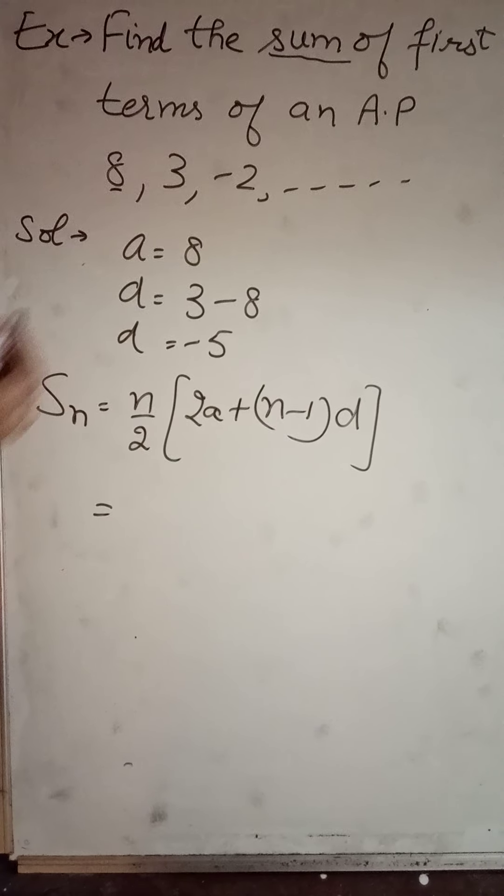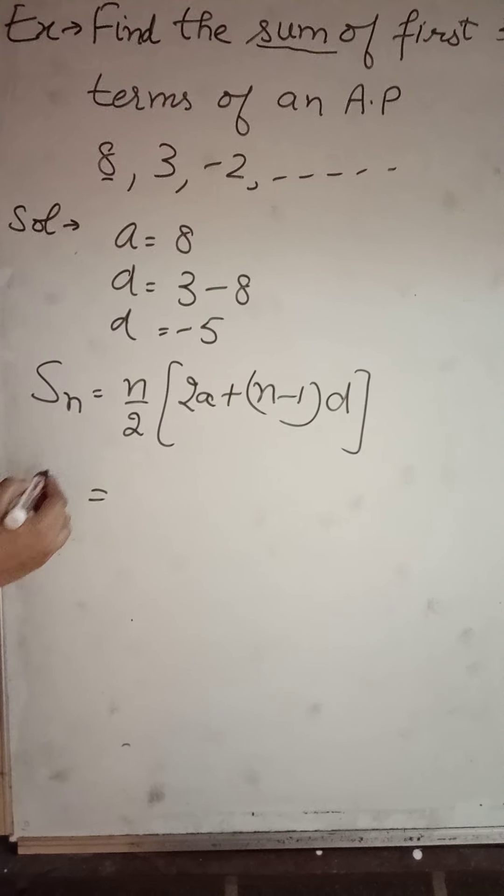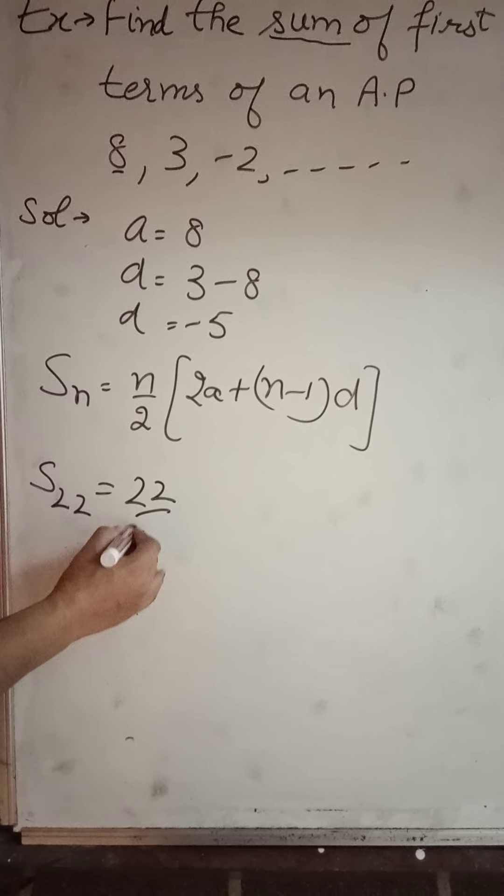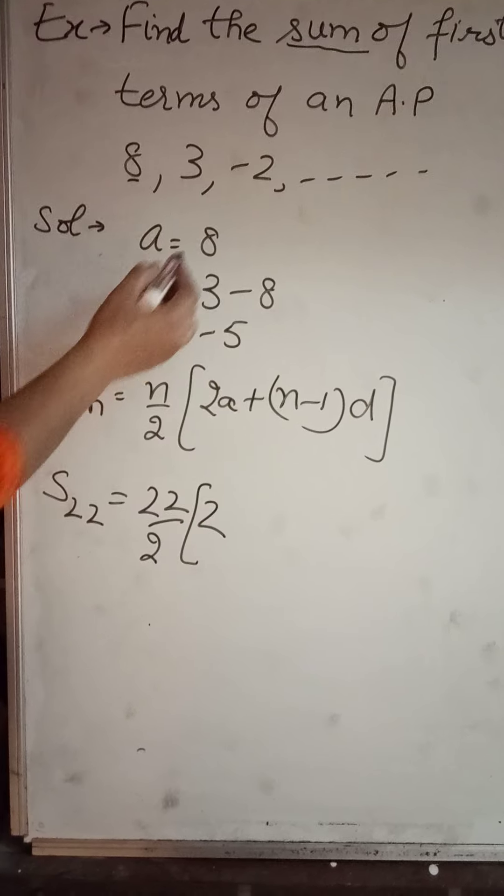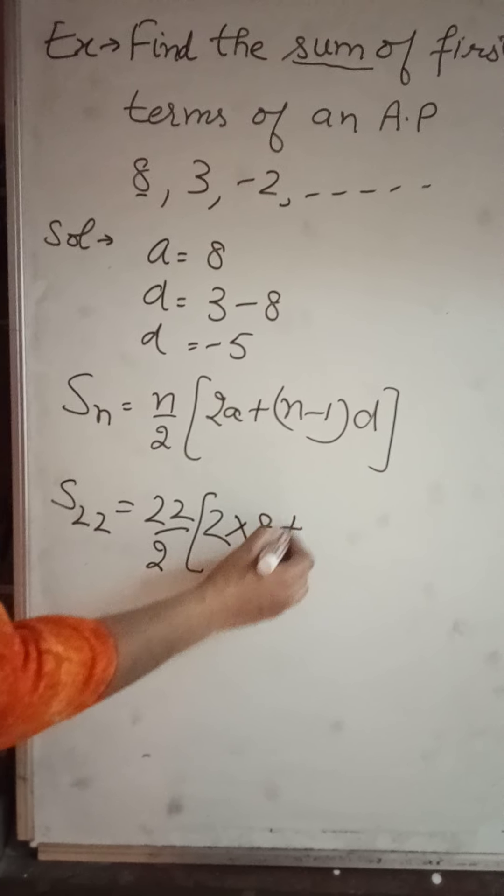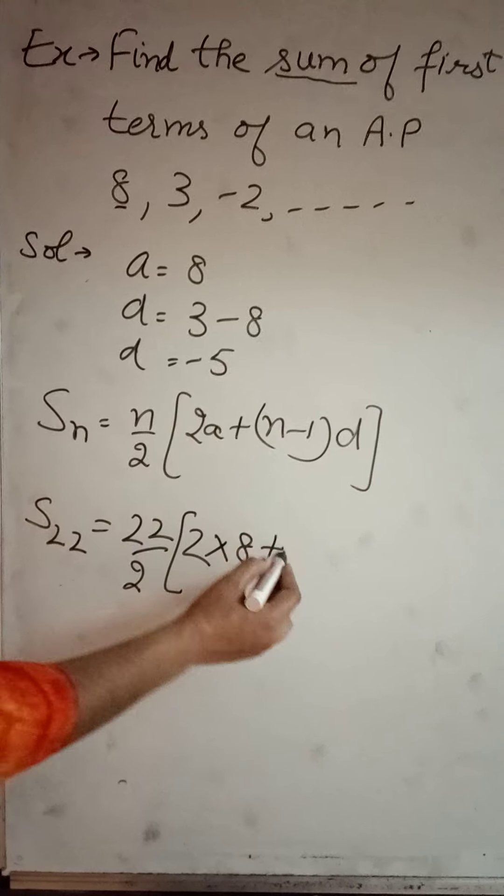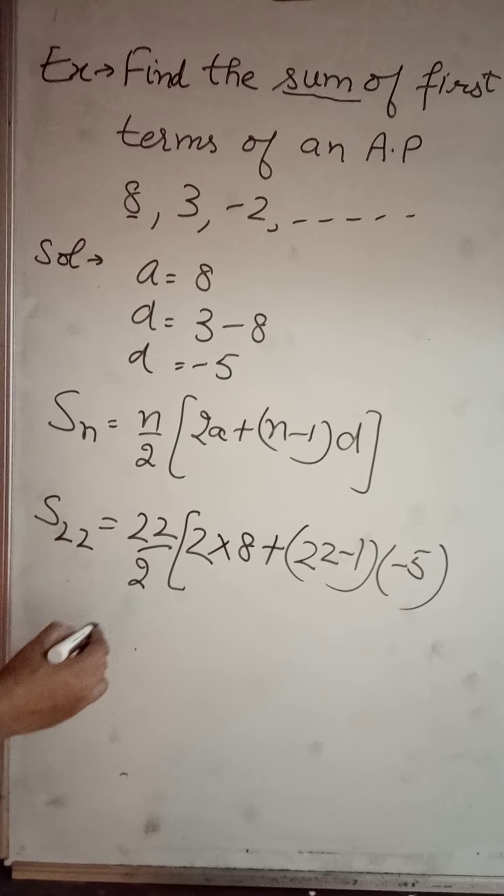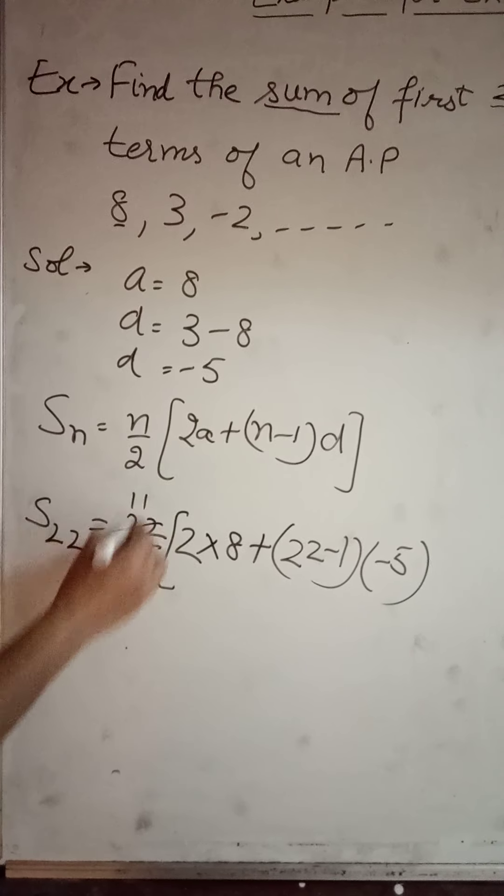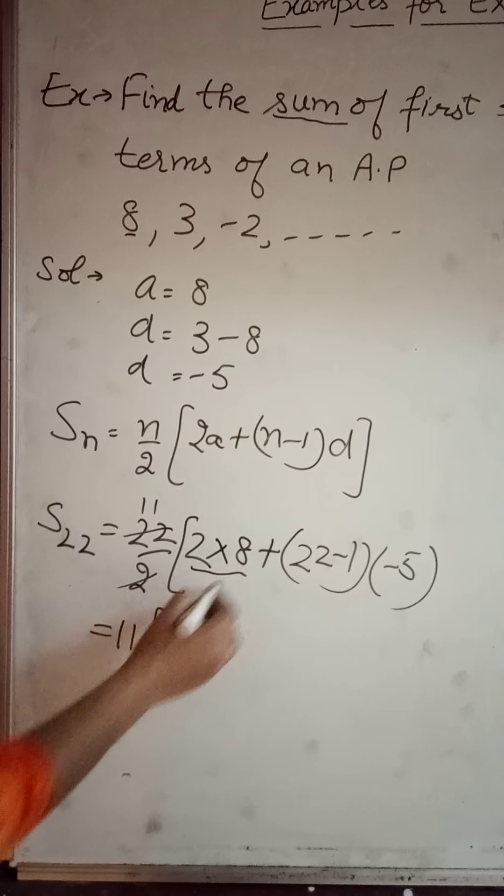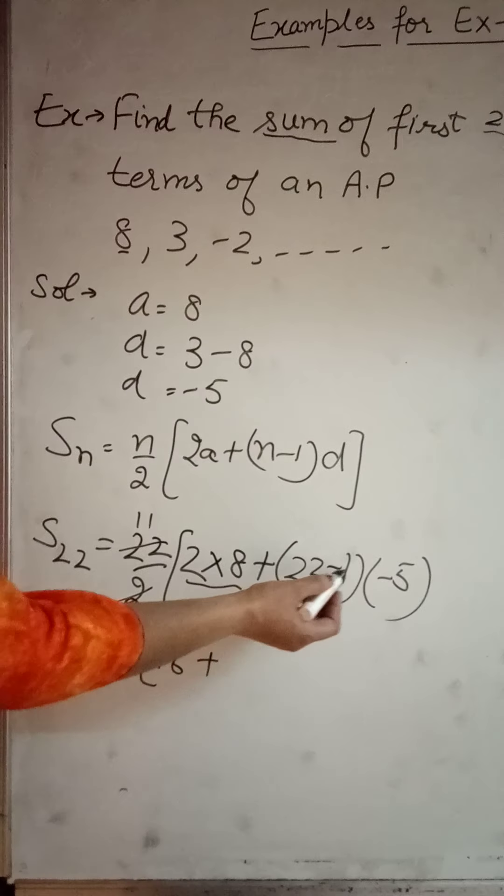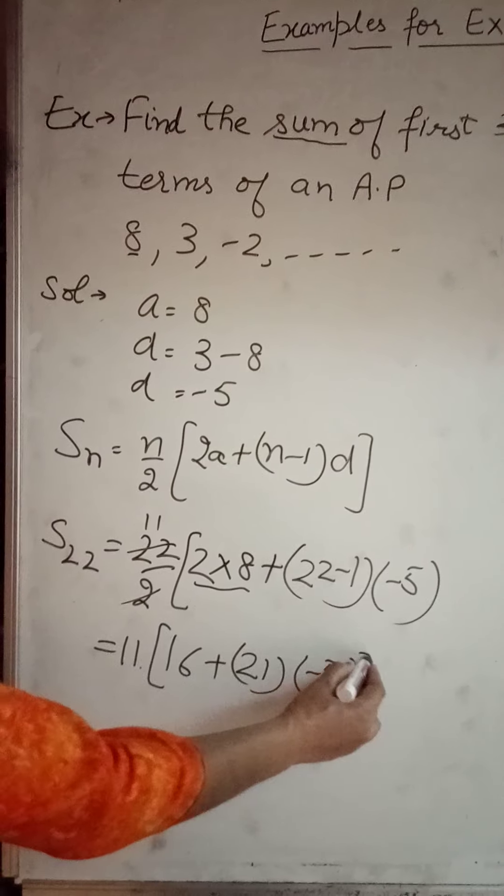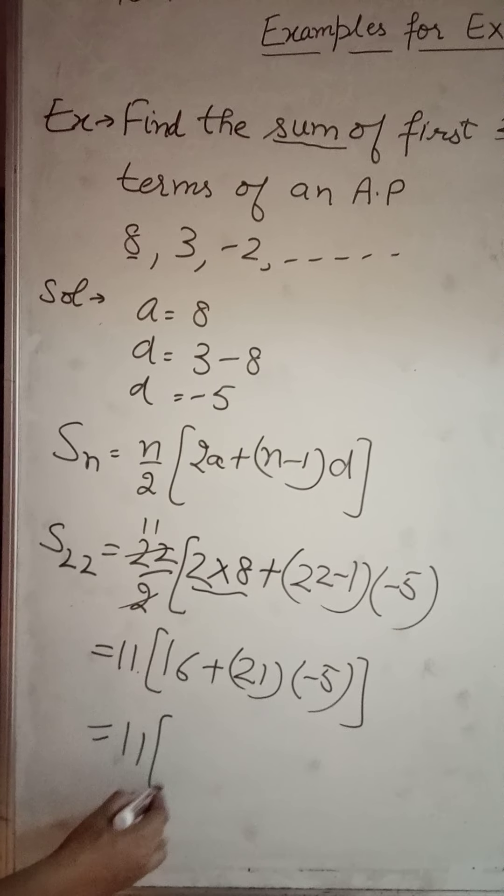We will be putting values. Now I will say first 22 terms, that means sum of first 22. In place of n, we will be writing 22. We will do 22 by 2. Now what is a? a is 8 plus, what is n? n is 22. n is 22, and what is d? d is minus 5. So cancellation, we got 11. Multiplication gives 16. 22 minus 1 will be 21 into minus 5.